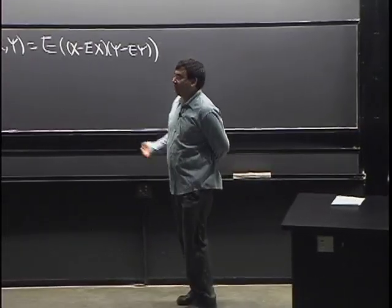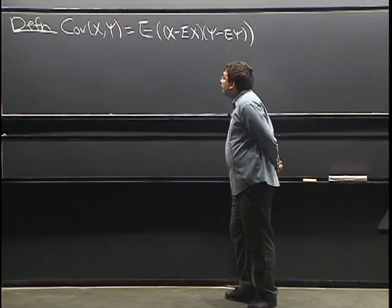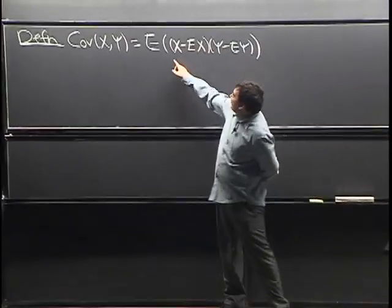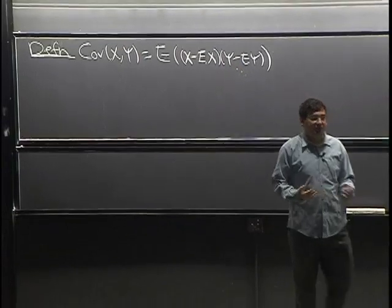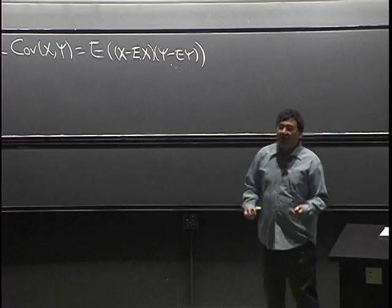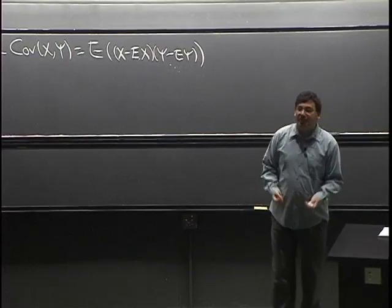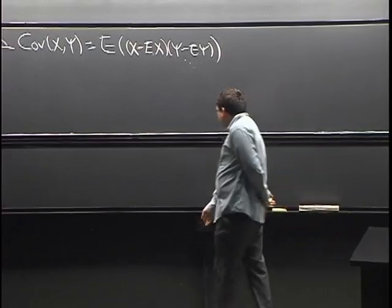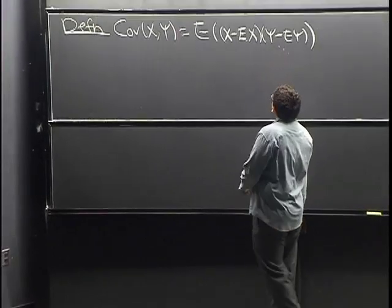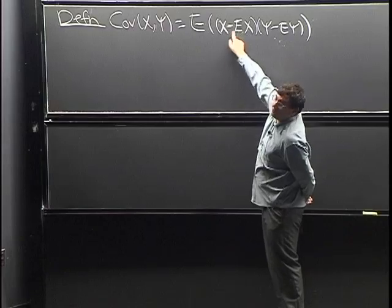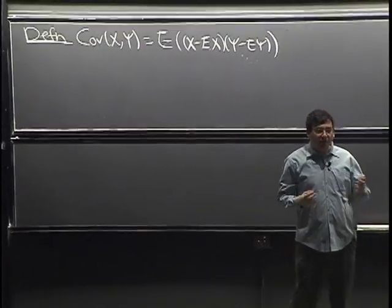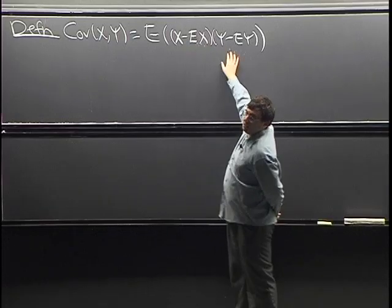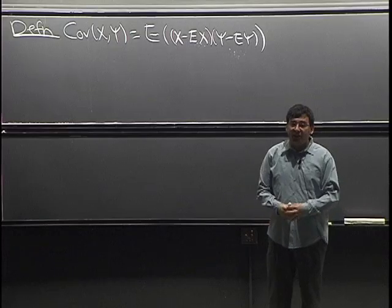Let's stare at it intuitively and see where this definition might have come from — why define it this way instead of any other way? Well, first of all, it's a product — something times something. We've brought the X stuff and the Y stuff together into one thing, because we're trying to see how they vary together. Suppose we had a lot of IID pairs (X, Y), but the pairs are IID — within each pair, Xi and Yi have some joint distribution and may not be independent.